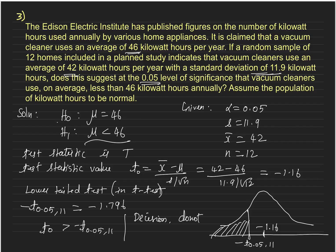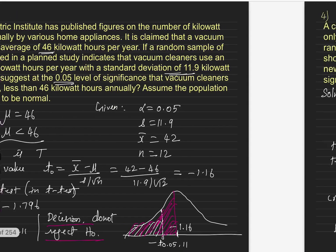The decision is: do not reject H0. We could find the p-value from the table, but the decision has already been made from the test statistic value.